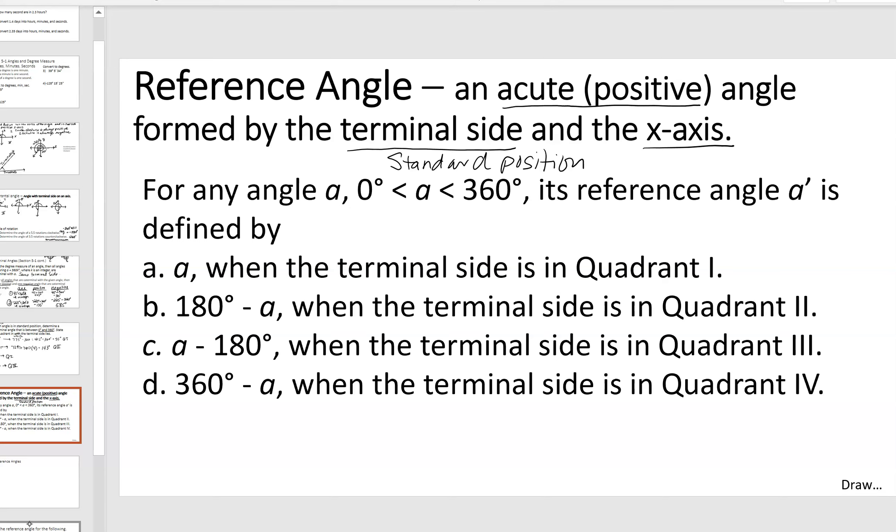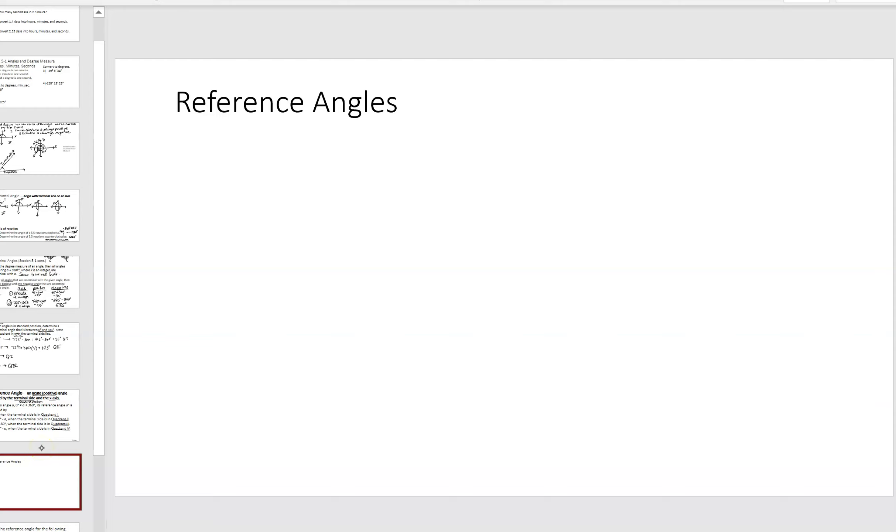So, if your angle lands in quadrant one, then that is the reference angle. If it lands in quadrant two, then you're just going to find the supplement, so 180 minus a. If it lands in quadrant three, you're going to take your angle minus 180 because your angle will probably be bigger than 180. And then again in quadrant four. You'll see on the side here, I have a separate slide here because I'm going to show you an example of each one of the cases.